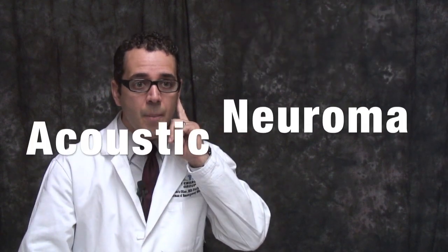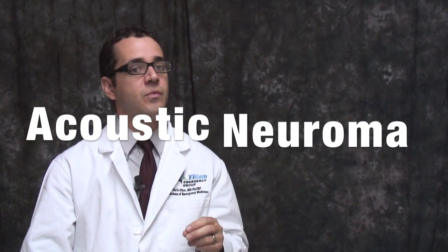An acoustic neuroma is a type of tumor in the nerve tissue that causes vertigo. Symptoms include vertigo with one-sided ringing in the ear and hearing loss.